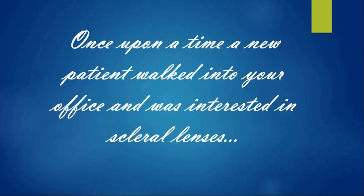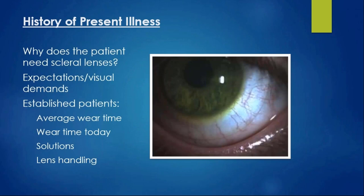When a new patient walks in interested in scleral lenses, step one is a very thorough history of present illness. Why does this patient want scleral lenses? Do they need them? What have they tried before? What has worked and what hasn't? Get the full history: visual demands, job requirements, expectations, and what they've heard. If they already wear sclerals, find out average wear time, how long they've had them on today, what solutions they're using, and lens handling habits.